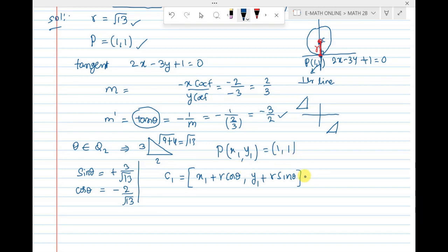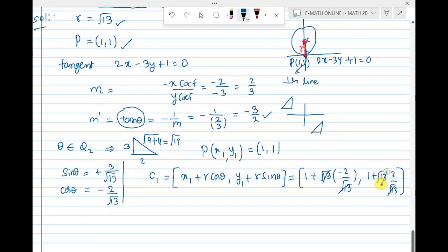x1 is 1, r is root 13, cos theta is minus 2 by root 13. Root 13 cancel. y1 is 1 plus r root 13, sin theta 3 by root 13. Root 13 cancel. Therefore, c1 equal to 1 plus into minus, minus 2 comma 1 plus 3, that equal to 1 minus 2 is minus 1, 1 plus 3 is 4.